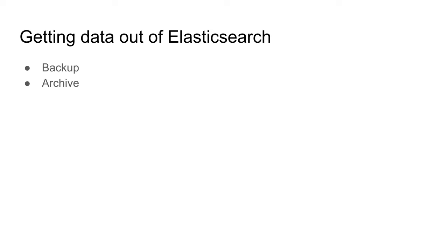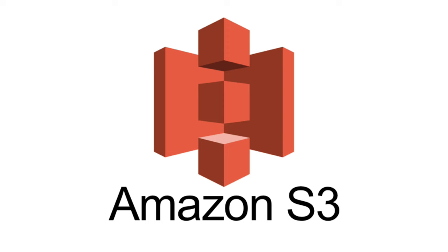Now that we've talked about getting data into Elasticsearch, eventually if we just keep writing data, it'll fill up the disks. There are two things we want to do: back up the data in case our server crashes, and implement an archiving process. Since this is time series data, we don't have to back up the entire Elasticsearch cluster — we can just pick up yesterday's data. I have several processes that run overnight and back up indexes created the day before.